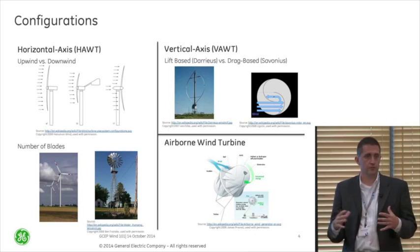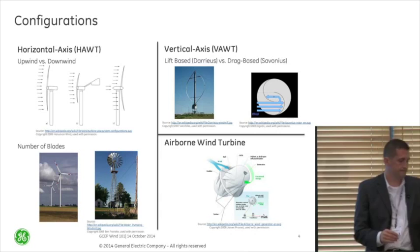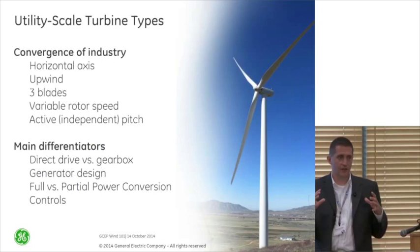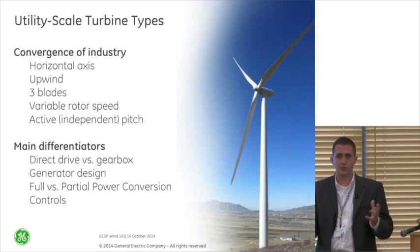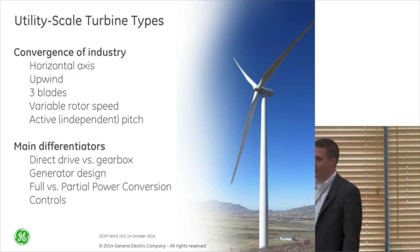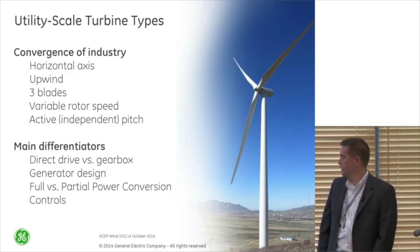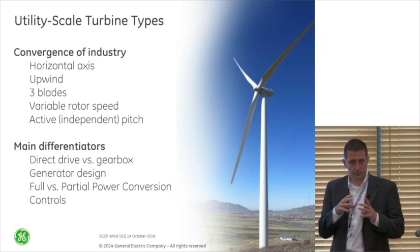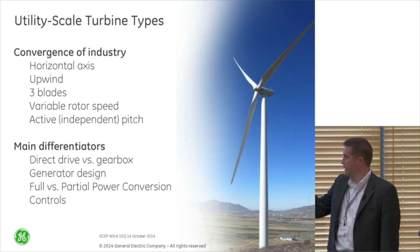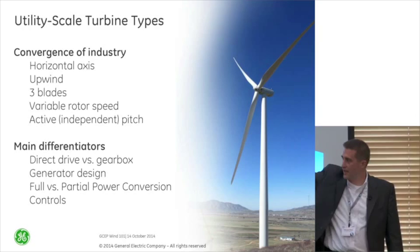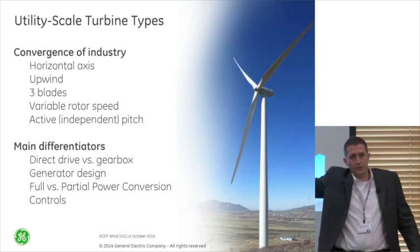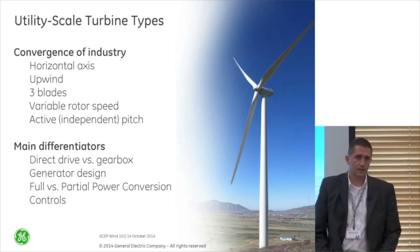I want to quickly ground you on where the industry has converged to. You've probably driven by and seen wind turbines — they're horizontal axis, upwind, three blades almost all the time. The rotor speed is variable. They have what we call active pitch — the blades have an aerodynamic shape, and we're able to turn them with a pitch mechanism to control rotor speed and feather them out of the wind when we get high wind speeds, making sure we don't create too many loads on the turbine.